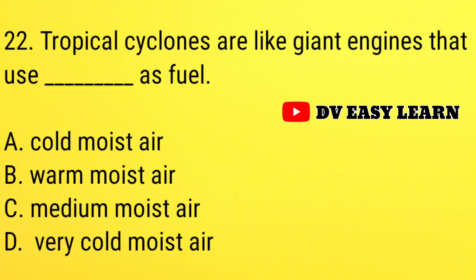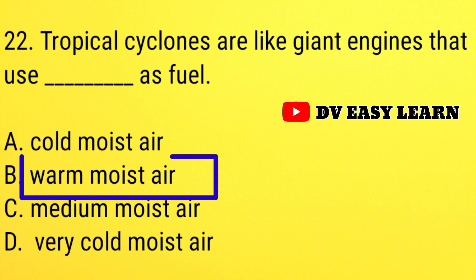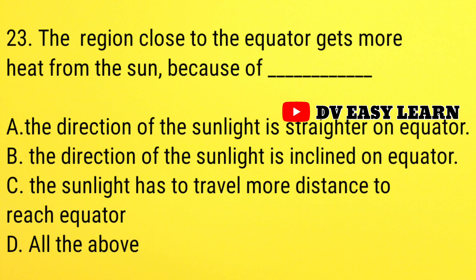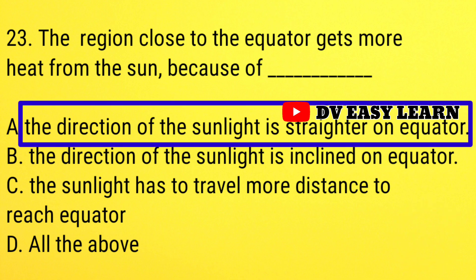Question number 22: tropical cyclones are like giant engines that use dash as fuel. Correct answer: warm moist air. Question number 23: the region close to the equator gets more heat from the sun because of? Correct answer: the direction of the sunlight is straighter on the equator.